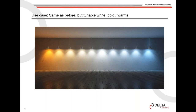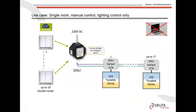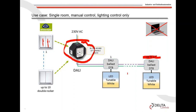The next step is human centric lighting. You would like to manually change the color and intensity of the lights — from cold to warm white. We have another controller with this functionality: you teach in a double rocker where one rocker switches the LEDs and the other changes the color from cold to warm white. Again, up to 17 LED panels can be connected directly.